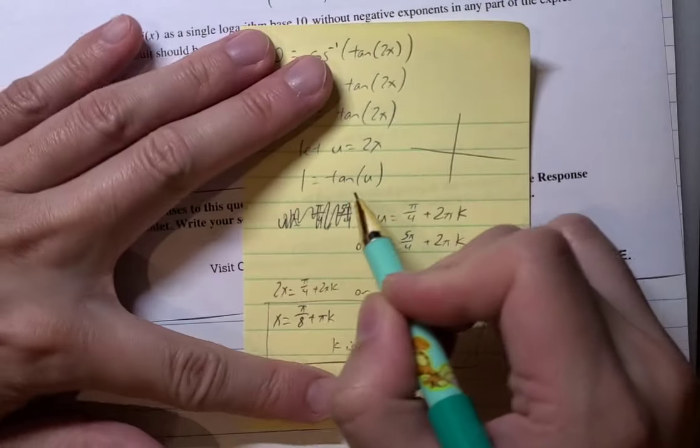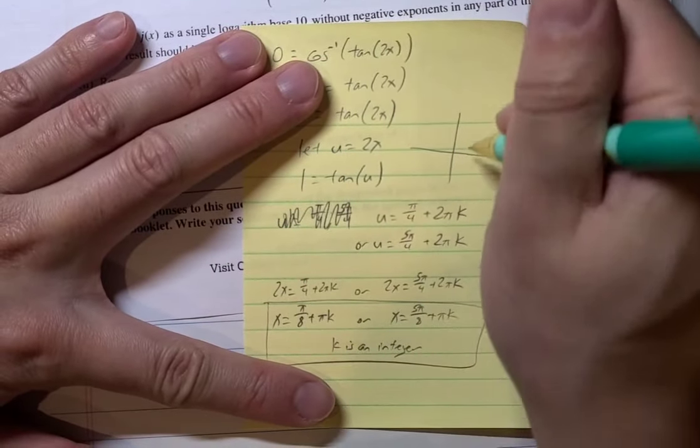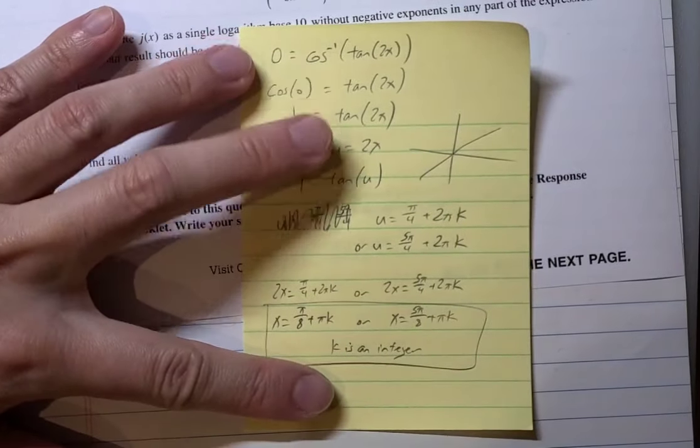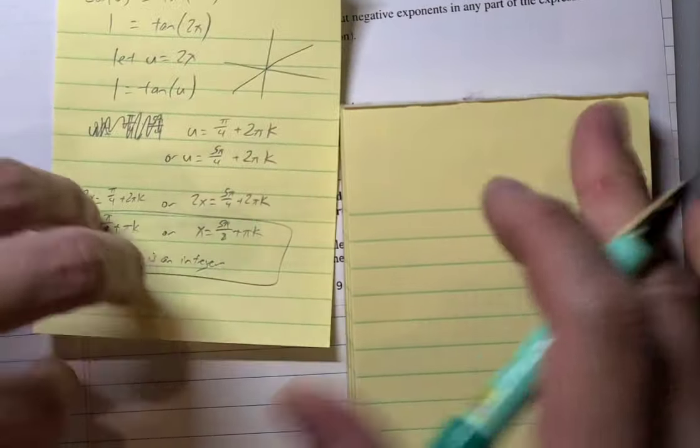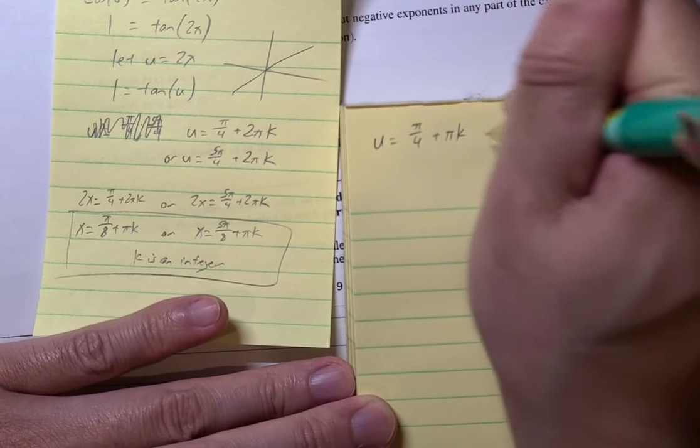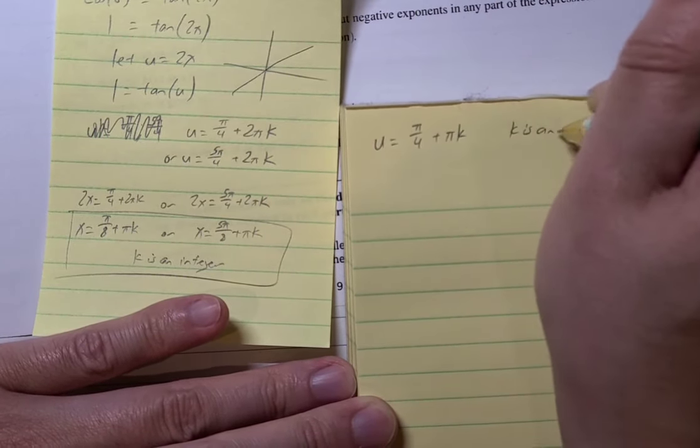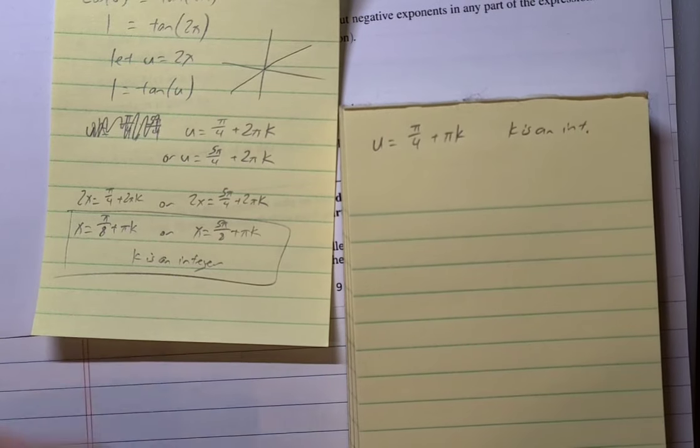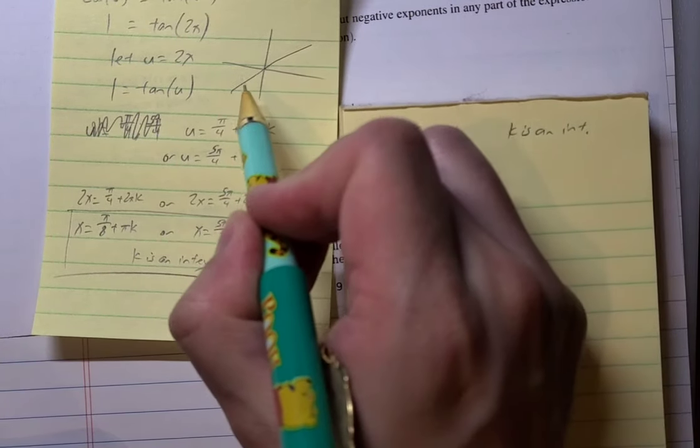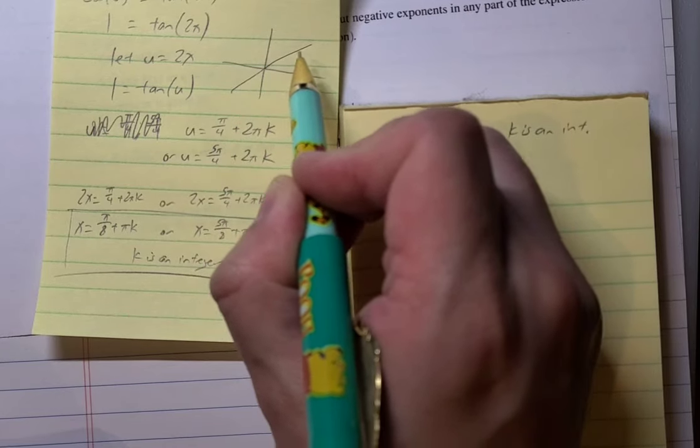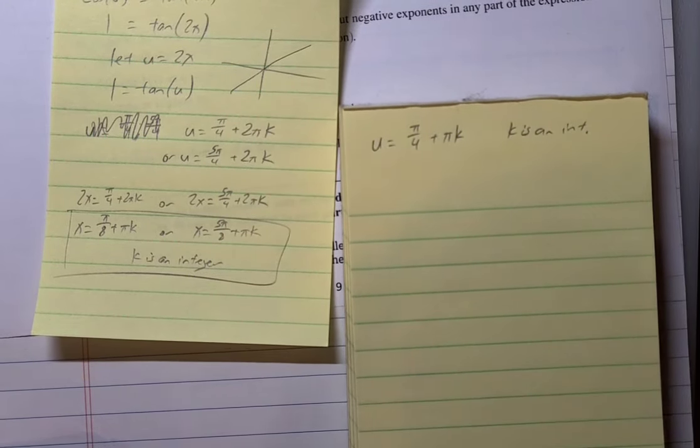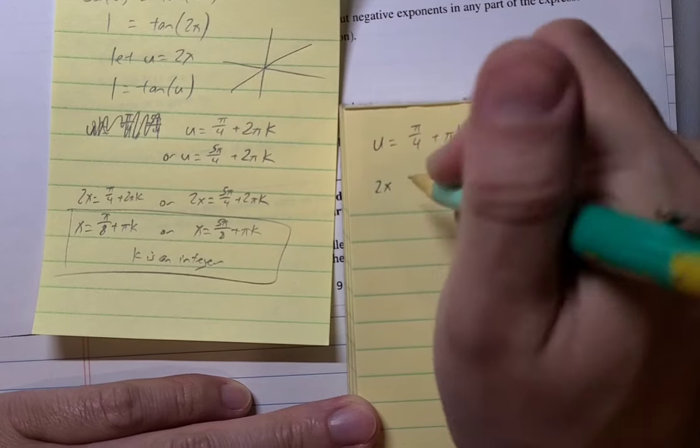So... Let's go back to here. Tangent u is 1. So, we were saying pi over 4 and 5 pi over 4. Well, I could have just wrote u as pi over 4 plus pi k, where k is an integer. Because plus pi would be here. Plus another pi would be here. Or minus pi would be here. And stuff like that. So, this is sufficient. And then let's backslip to u as 2x, pi over 4 plus pi k.